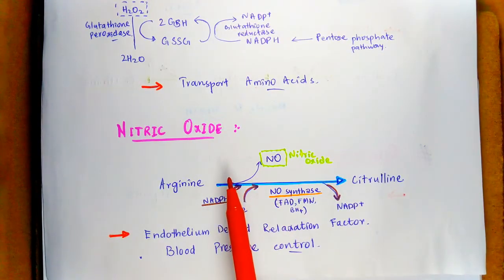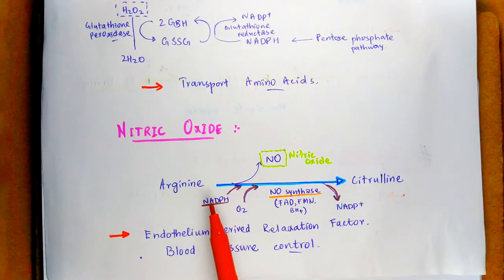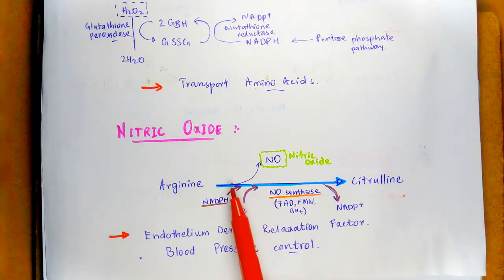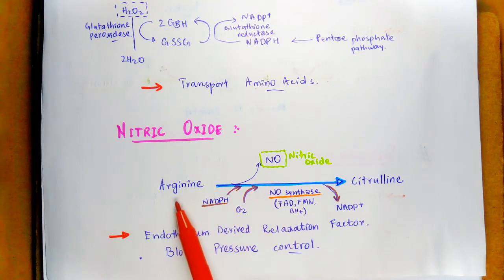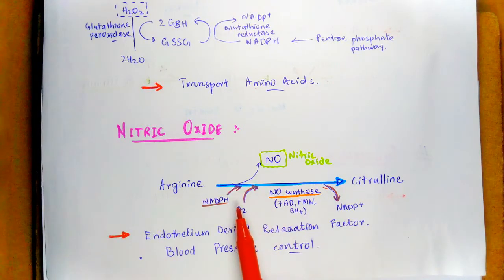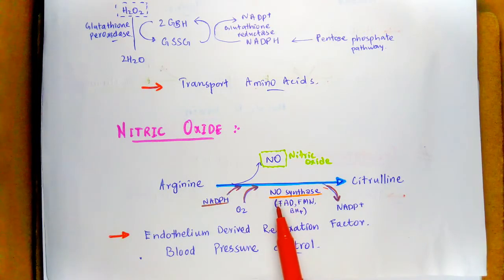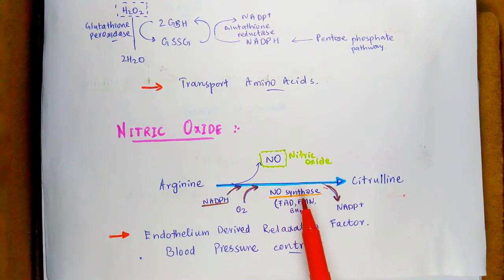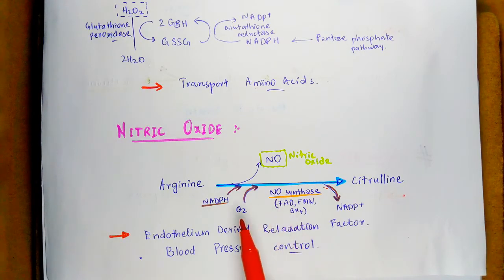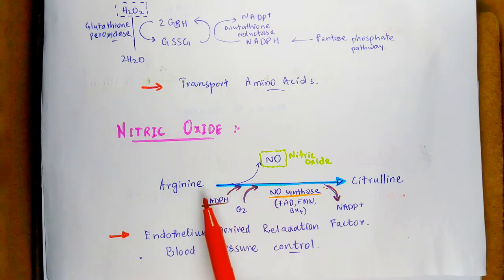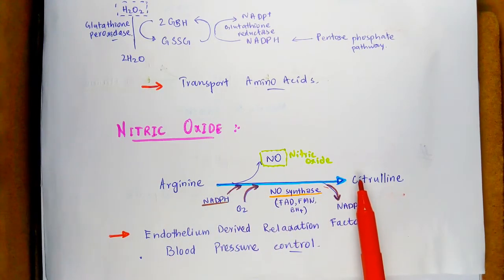Nitric oxide is also one of the products derived from amino acids. Its synthesis involves the conversion of L-arginine into citrulline. Nitric oxide is liberated during this conversion of arginine to citrulline, and this reaction is carried out by the nitric oxide synthase enzyme. It is a complex enzyme that requires flavin adenine dinucleotide (FAD), flavin mononucleotide (FMN), tetrahydrobiopterin (BH4), and oxygen is also involved in this conversion.